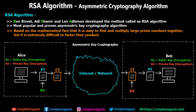Today we are taking a look at an asymmetric key algorithm. RSA was developed by Ron Rivest, Adi Shamir, and Len Adleman — that's why the name RSA, from their initials. It is one of the most popular and proven asymmetric key cryptography algorithms. The main crux of RSA is the mathematical fact that it is easy to find and multiply large prime numbers together, but it is extremely difficult to factor their products.